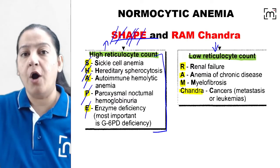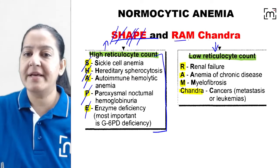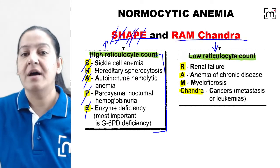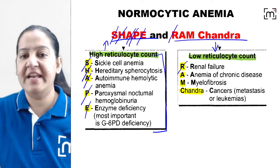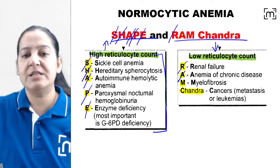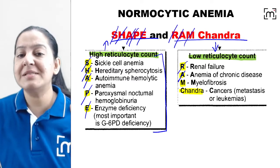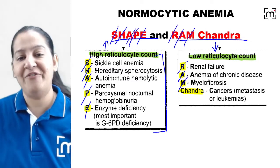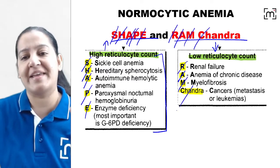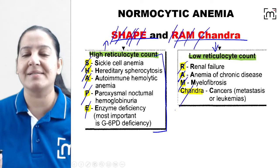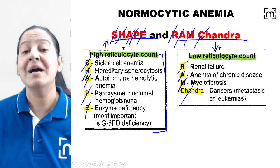Now if the retic count is low, the mnemonic is Ramchandra. R stands for renal failure, A for anemia of chronic disease, N for myelofibrosis, and C (Chandra) stands for cancers like metastasis or leukemias.